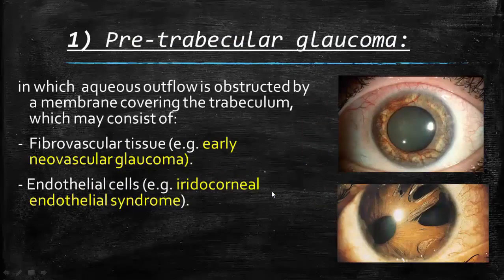Pre-trabecular glaucoma: the aqueous outflow in this type is obstructed by a membrane covering the trabecular meshwork. It may be a fibrovascular membrane, as in cases of neovascular glaucoma — here we can see the vessels in the eye, and these will also be present in the angle as seen by gonioscopy — and also by endothelial cells, as in cases of iridocorneal endothelial (ICE) syndrome.